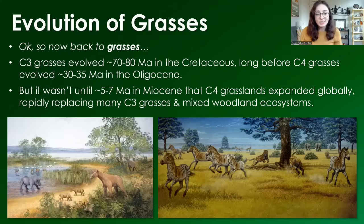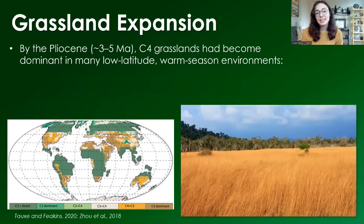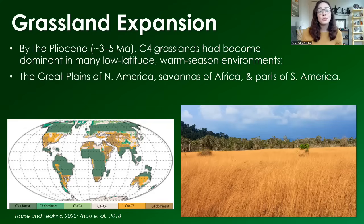C4 grasses evolved around 30 to 35 million years ago in the Oligocene. But just because grasses had evolved doesn't mean they necessarily became super widespread. It wasn't until the late Miocene, around 5 to 7 million years ago, that C4 grasslands expanded globally and relatively rapidly replaced a lot of C3 grasses and mixed woodland ecosystems. By the Pliocene, around 3 to 5 million years ago, C4 grasslands had become dominant in many low-latitude, warm-season environments — for example, the Great Plains of North America, the savannas of Africa, and parts of South America.